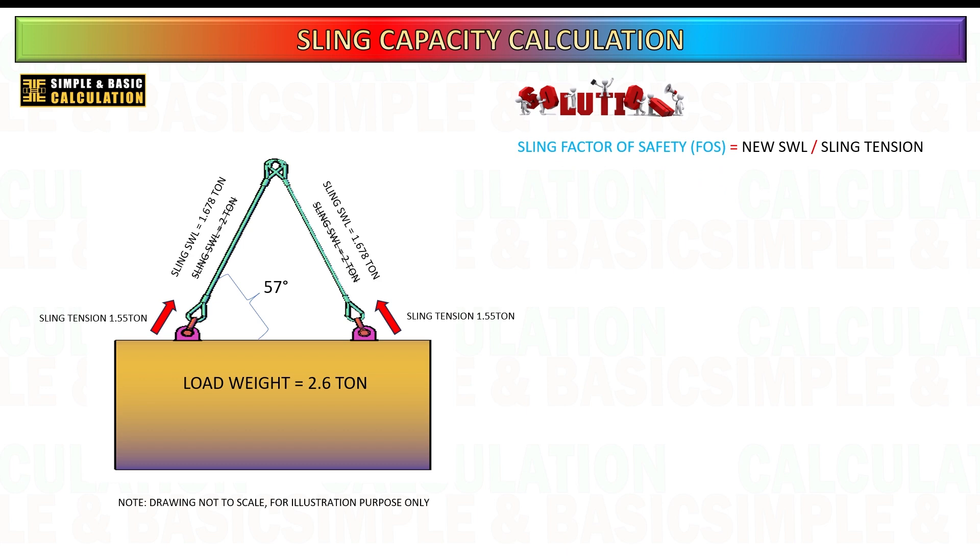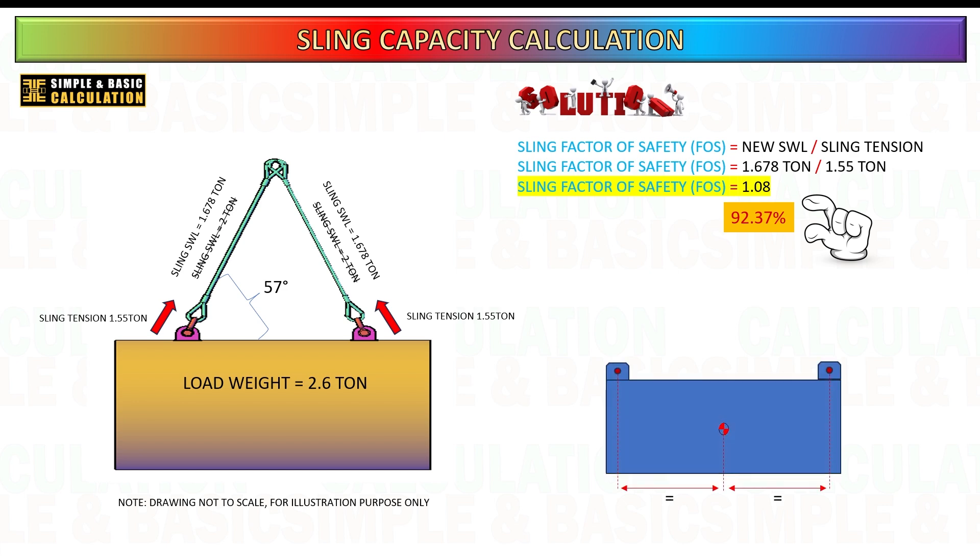This calculation indicates that the FOS is approximately 1.08, suggesting that you are utilizing around 92.37% of the sling's capacity. A FOS of 1.08 means that the sling is operating very close to its reduced capacity. Although this is above 1.0, it indicates a minimal margin of safety. In practical terms, this means that the sling is being used at nearly its maximum effective load capacity.